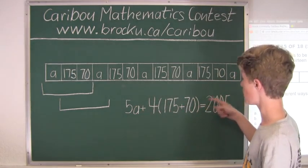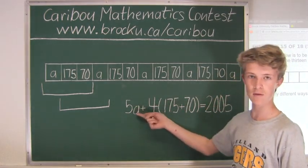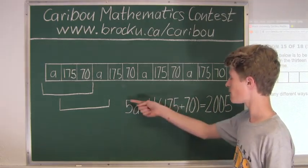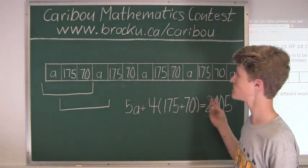All we would have on the left side is 5A, and then we would have a number. And then, since we want A, we would just divide both sides by 5, and then we would have A equals a number.